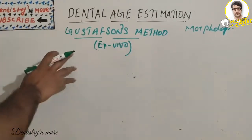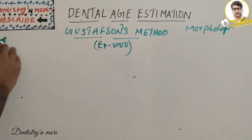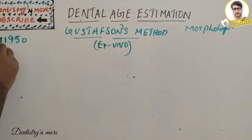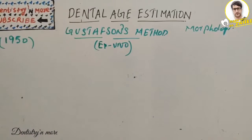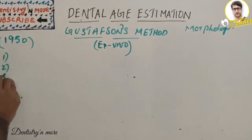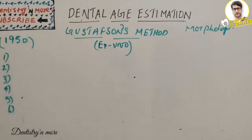It is a morphological method. In 1950, Gustafson introduced this age estimation method based on the morphologic and histological changes of the tooth. He has six criteria, and based on these six criteria, he planned the age estimation.